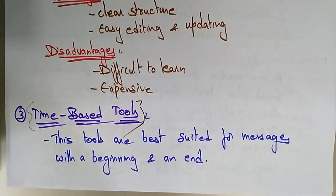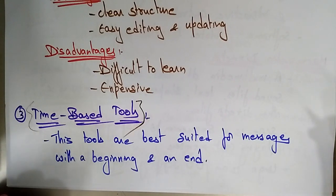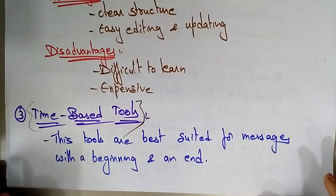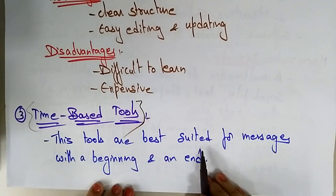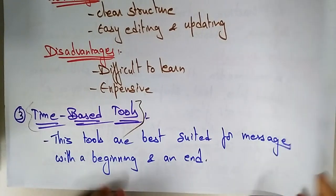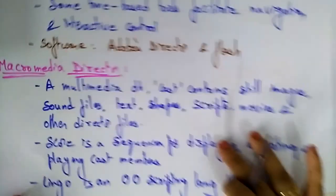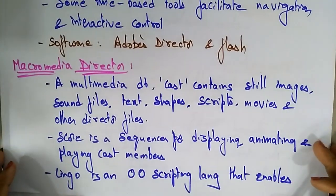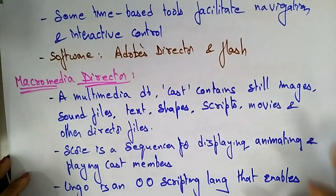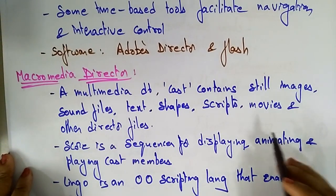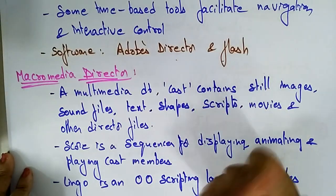Let's continue with the types of authoring tools. In the previous video I explained about the card and page-based tools and the icon-based event-driven tools. Now let's see another type of authoring tools — the time-based tool. Time-based tools are best suited for messages with a beginning and an end. Some time-based tools facilitate interactive navigation and control. The software used in time-based tools includes Adobe Director and Flash.